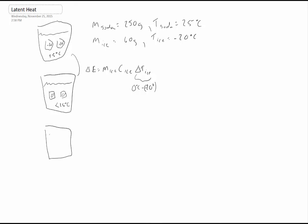The second step is that the ice melts. Assuming all of the ice melts, the ice sits at zero degrees Celsius — still at zero, because the temperature doesn't change during melting — but it's now water instead of ice. The energy needed for that step is just the mass of the ice times the latent heat of ice. The latent heat basically tells us how much energy it takes to melt a certain amount of ice.